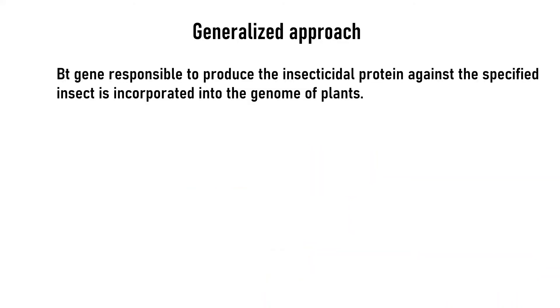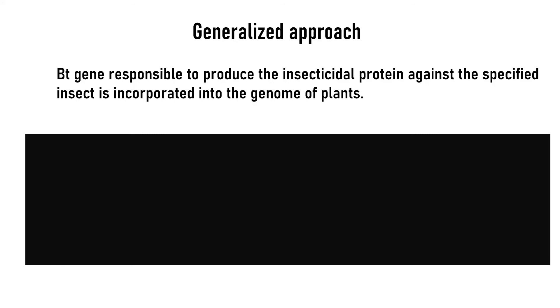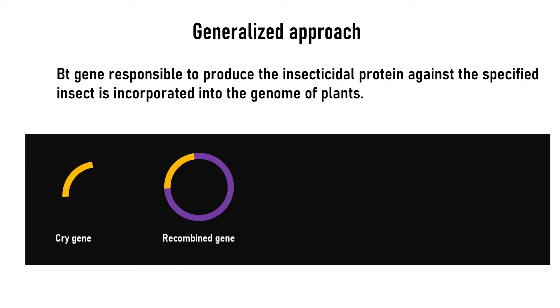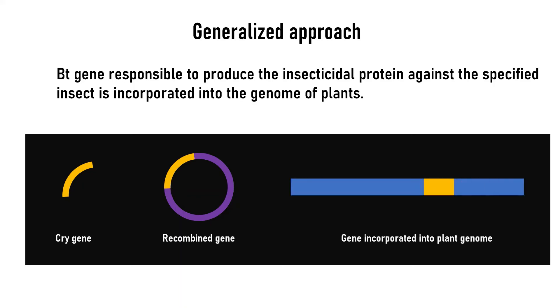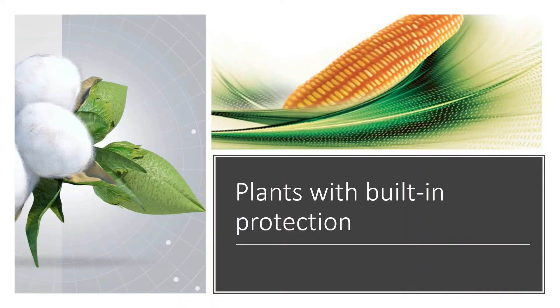A generalized approach of recombinant DNA technology used to produce pest-resistant plants is shown here. An Agrobacterium-based method is used. The pest-specific Cry protein-producing Cry gene is incorporated into a suitable vector. The further process results in the incorporation of the gene into the plant genome. These genetically modified plants will then have an inbuilt mechanism of protection against targeted pests.